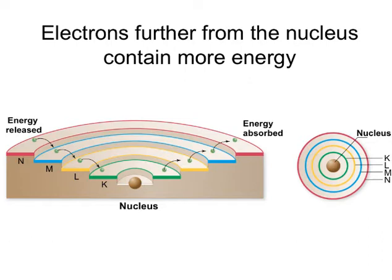In the analogy presented here, an electron moving closer to the nucleus is like moving downstairs, while an electron moving farther away from the nucleus is like moving upstairs, and it requires energy.